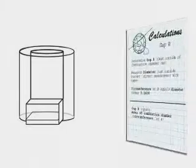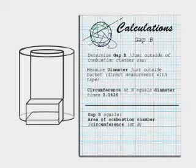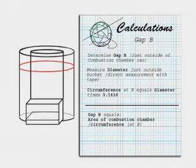Determine gap B just outside of the combustion chamber can. The circumference at B equals diameter times 3.1416. Gap B equals the area of the combustion chamber divided by the circumference at B.